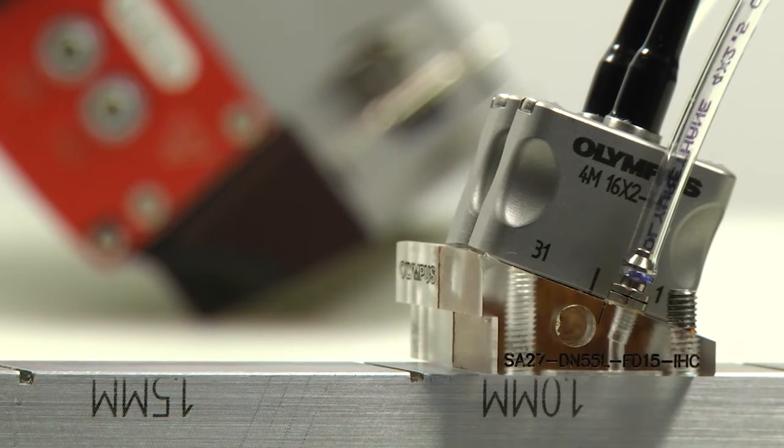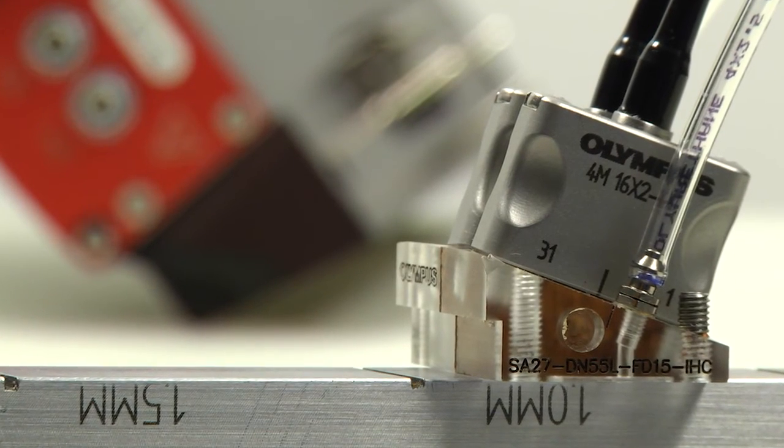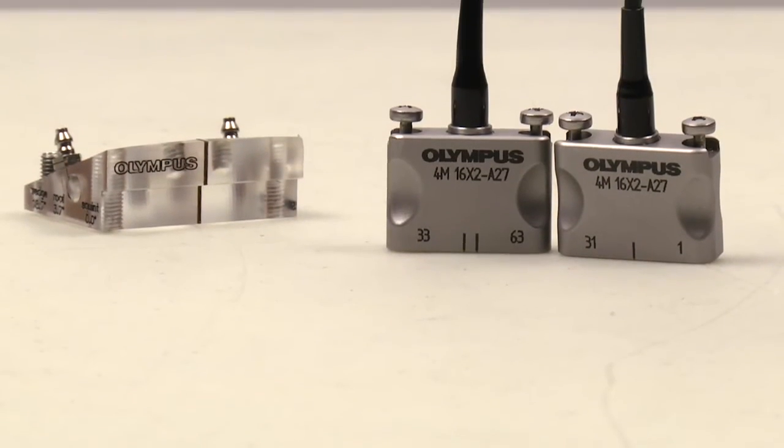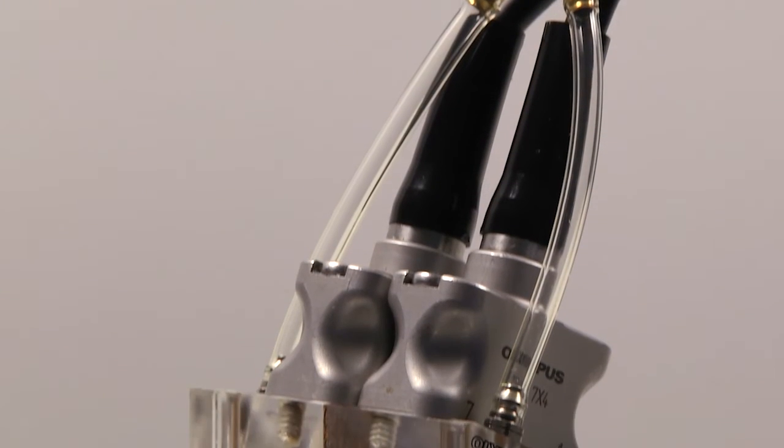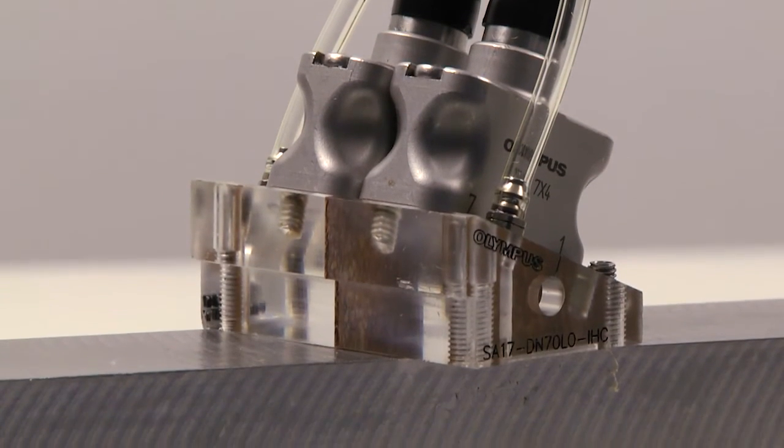More than software features or instrument specifications, improvements in austenitic weld inspection will be realized by probe technology and wedge strategies.